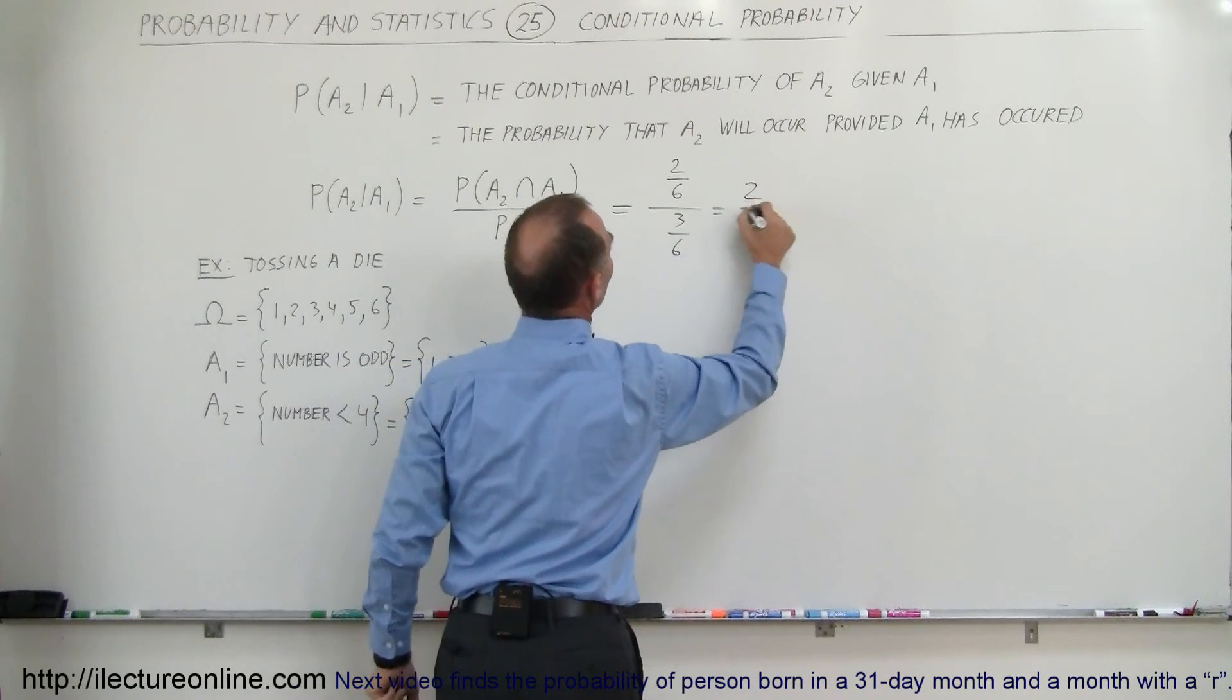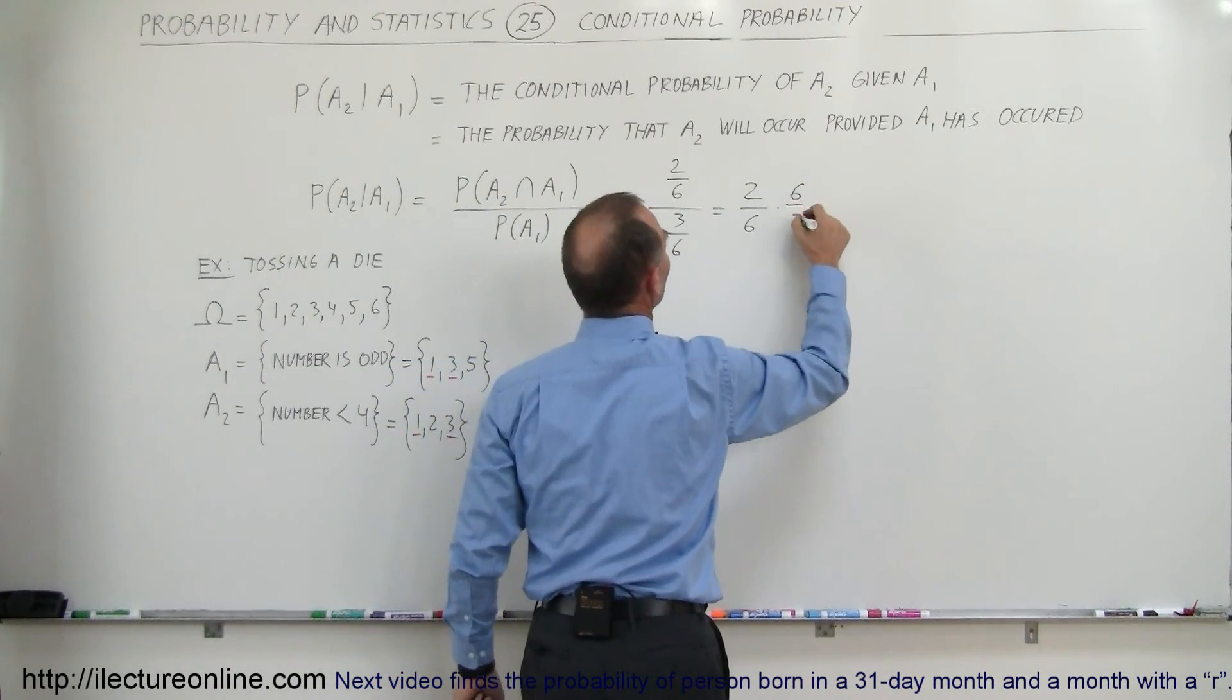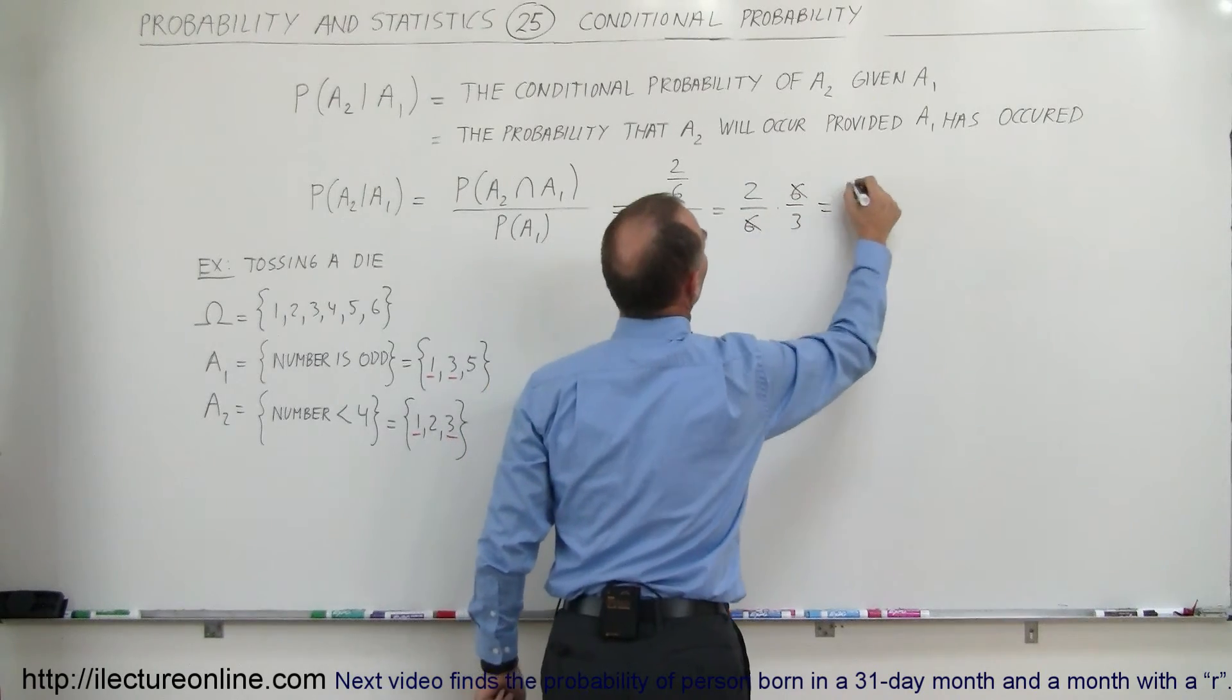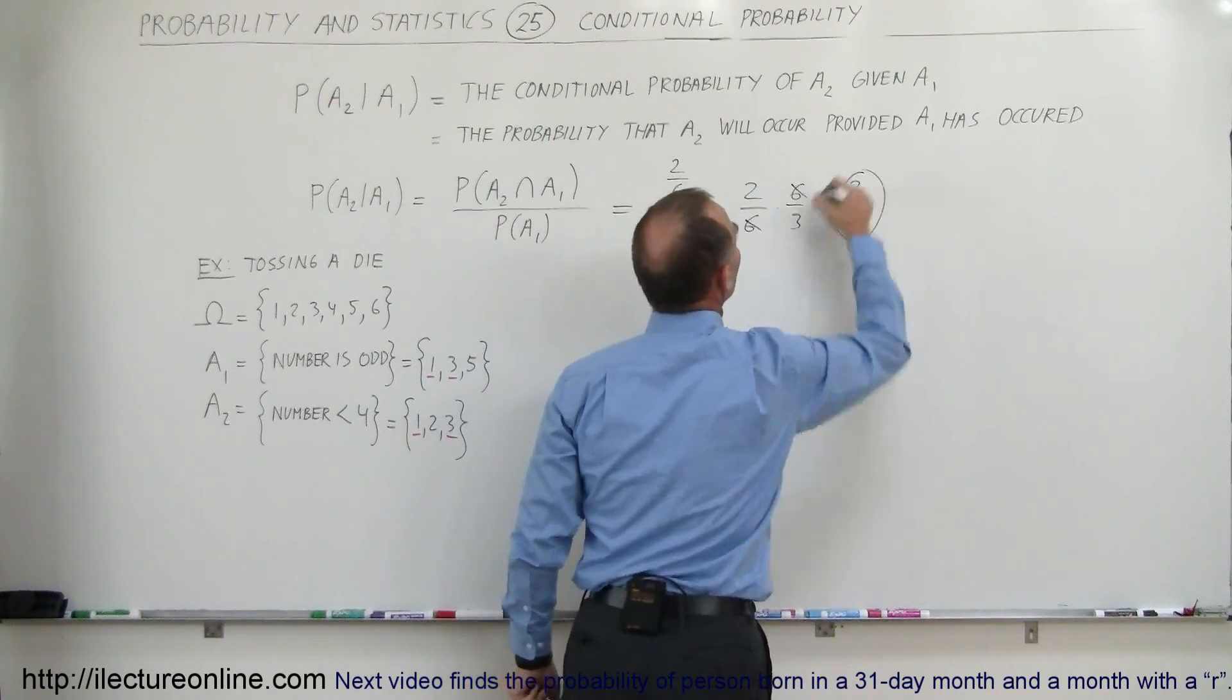This becomes 2 divided by 6 times the inverse, 6 divided by 3. The 6's cancel out and we get a probability of 2 out of 3.